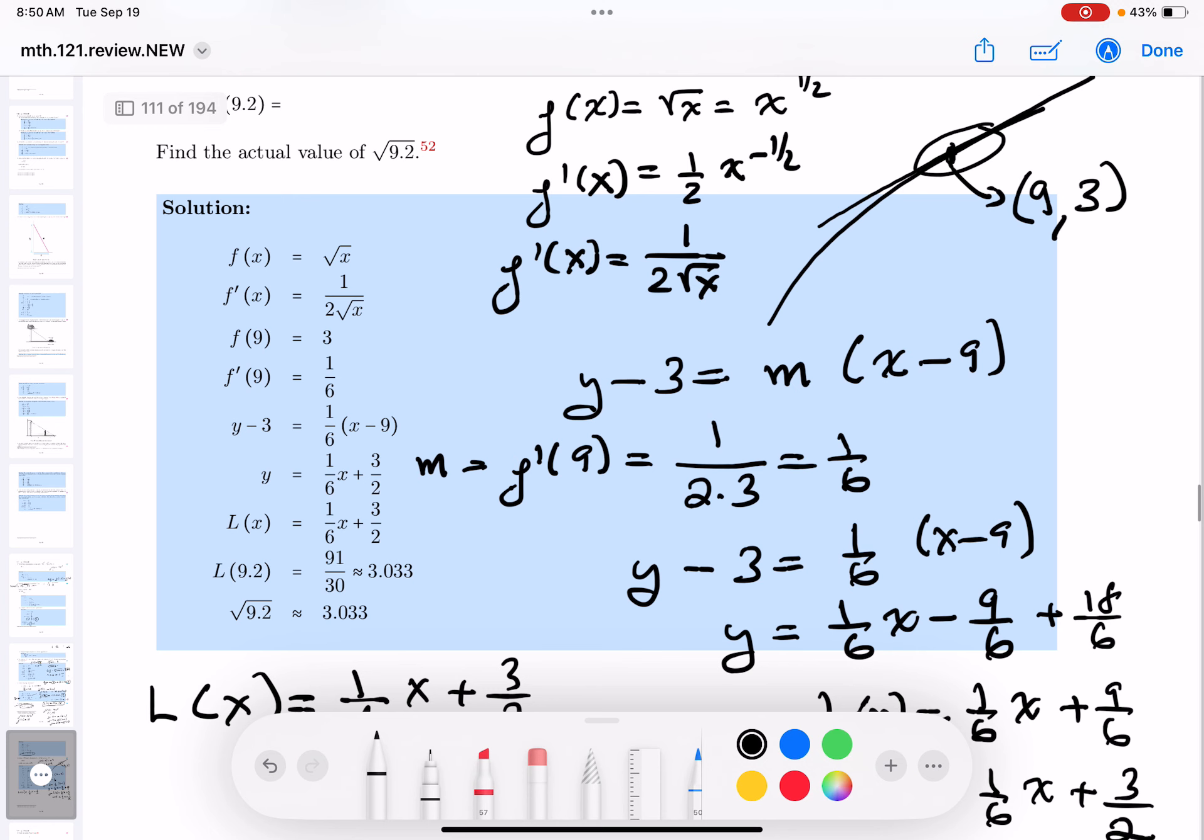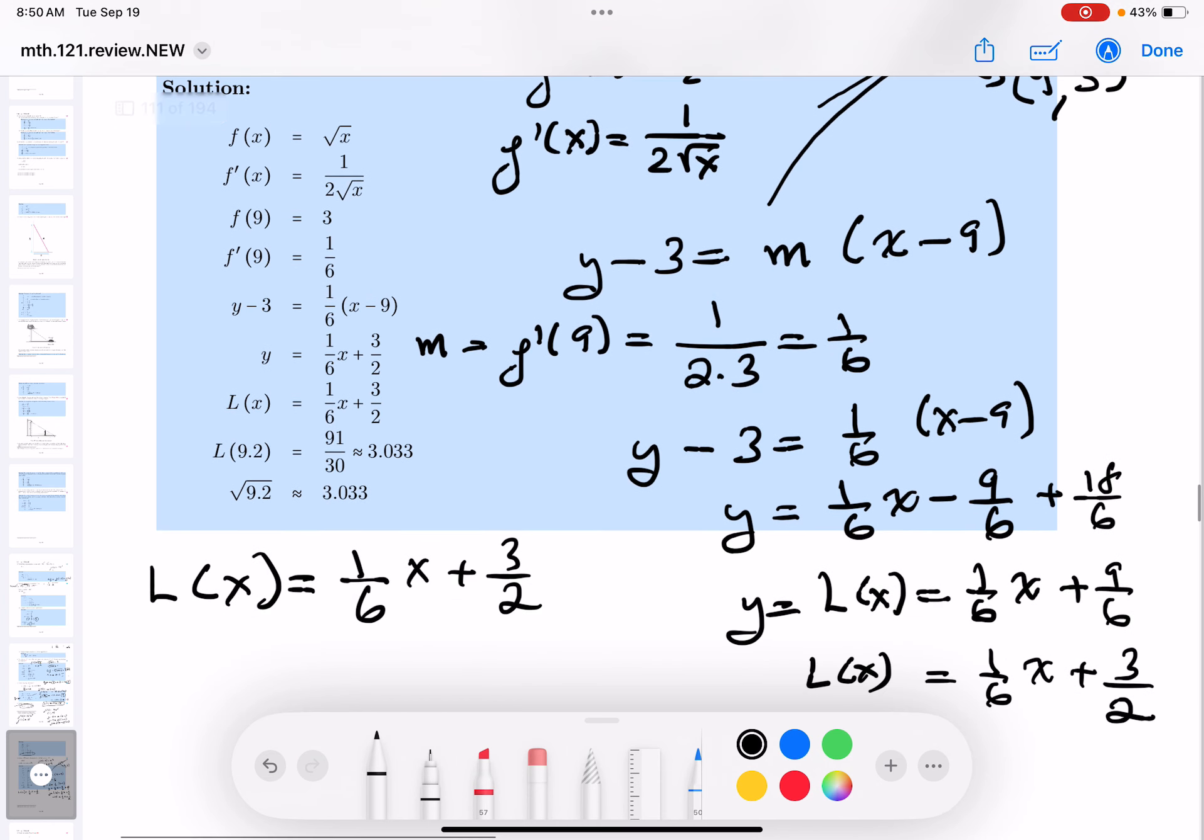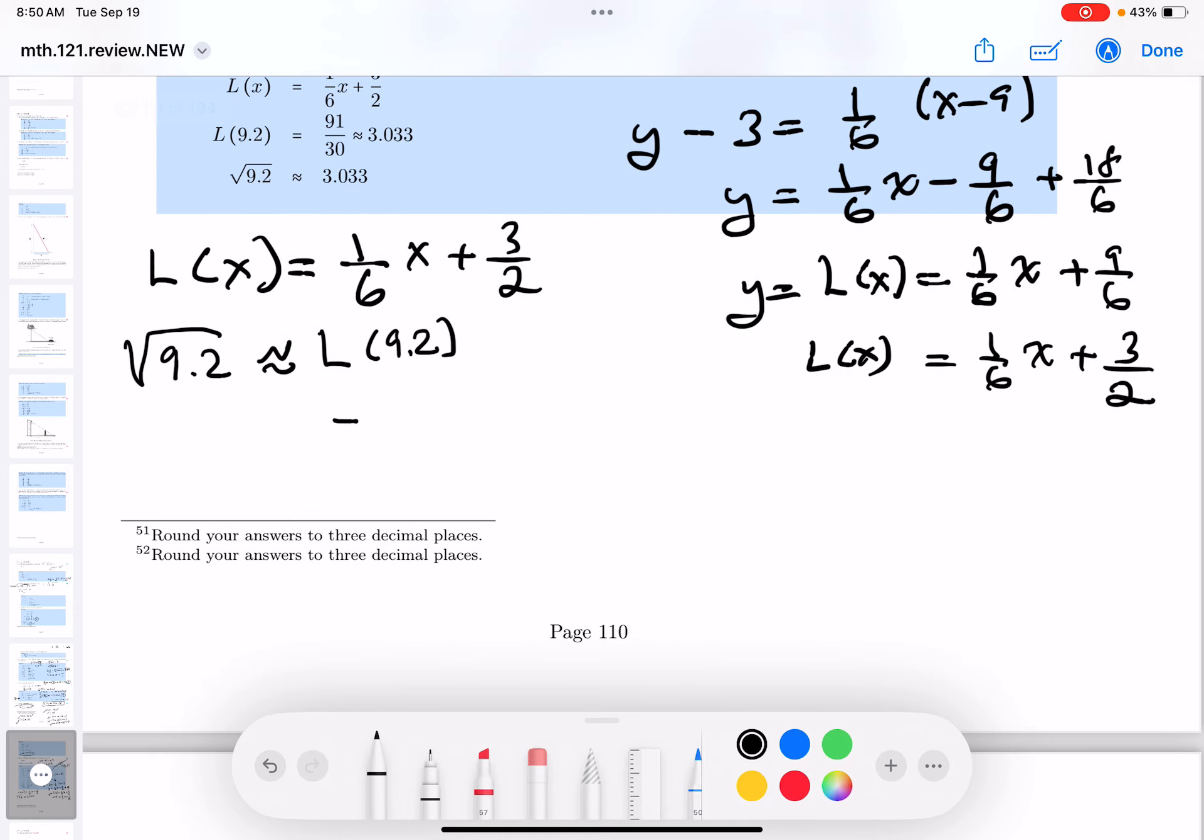So they want me to use this to approximate the square root of 9.2. So what I'll write down is the square root of 9.2 is approximately equal to L at 9.2. Now, granted, I'm not going to ask you to do much computation over here, but what does this equal? 1/6 times 9.2 plus 3/2. I really don't think doing the arithmetic at this stage is going to be much help to doing the problem over here.